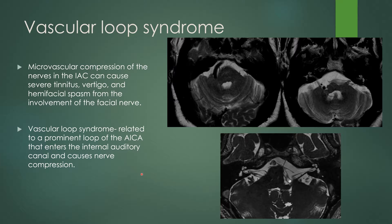When looking for hemifacial spasm causes, you are looking for something compressing the 7th and 8th nerve complex along its course. Here there is tortuous right and left vertebral artery flow voids displacing the 7th and 8th nerve complex posterolaterally, with a more superior image showing the vertebral arteries joining to form the basilar artery.